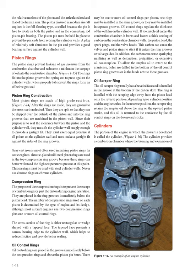The oil scraper ring usually has a beveled face and is installed in the groove at the bottom of the piston skirt. The ring is installed with the scraping edge away from the piston head, or in the reverse position, depending on cylinder position and engine series. In the reverse position, the scraper ring retains surplus oil above the ring on the upward piston stroke, and this oil is returned to the crankcase by the oil control rings on the downward stroke.